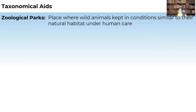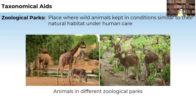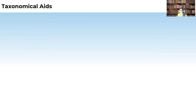Zoological parks are places where wild animals are kept in conditions similar to their natural habitat, but under human care. These zoos help us to preserve animals from extinction by providing natural-like conditions while conserving them. We keep animals in zoological parks to know about their habits, behavior, and characteristics.